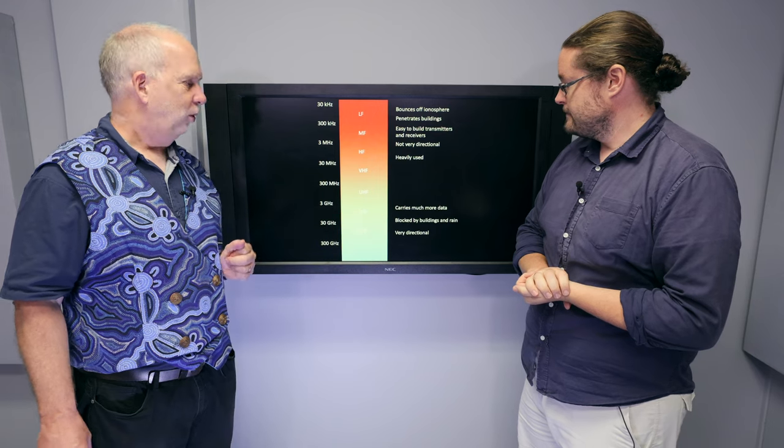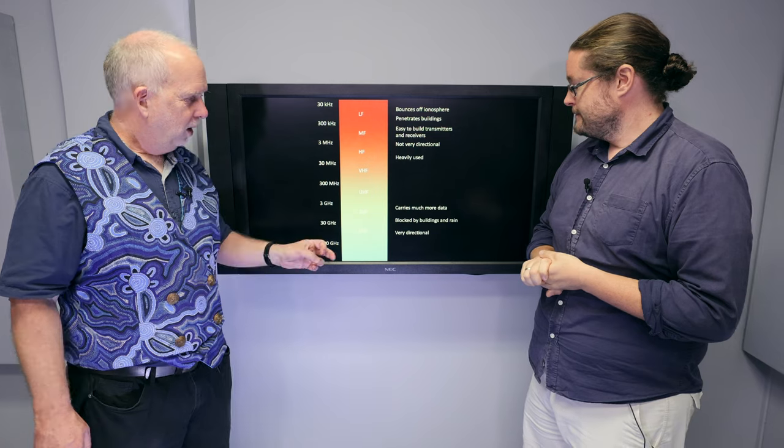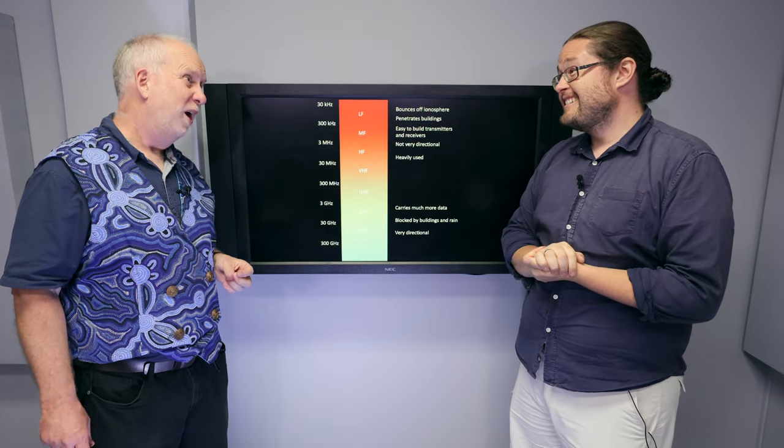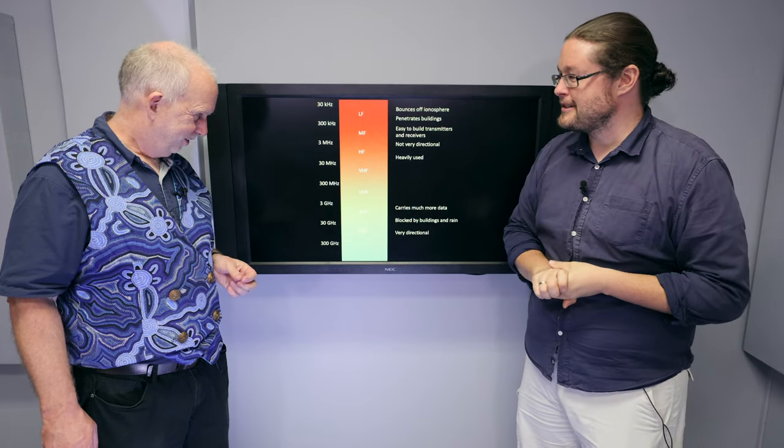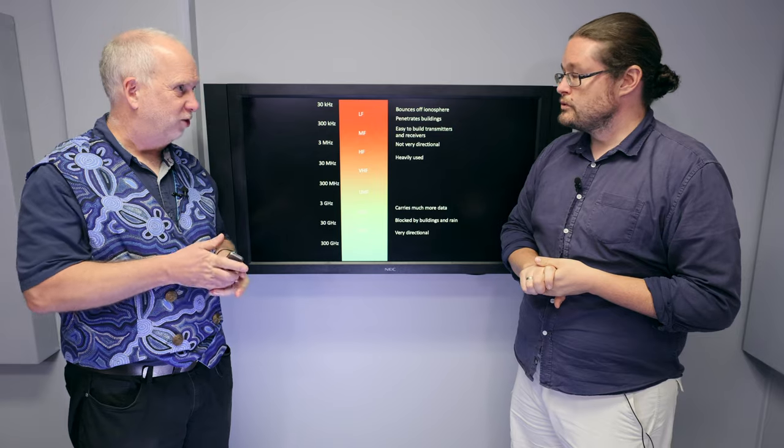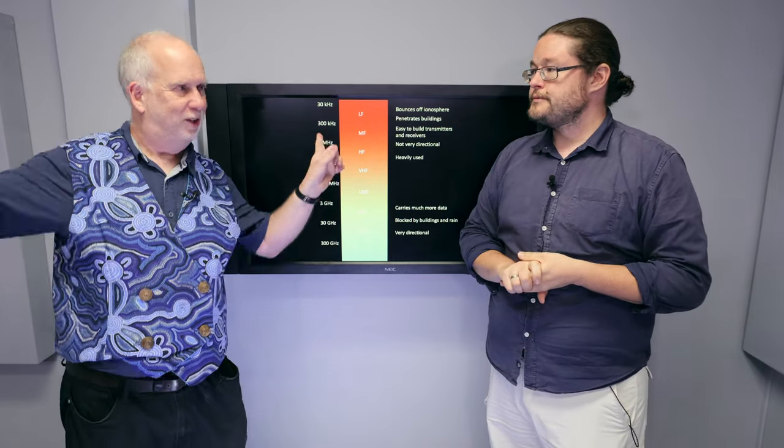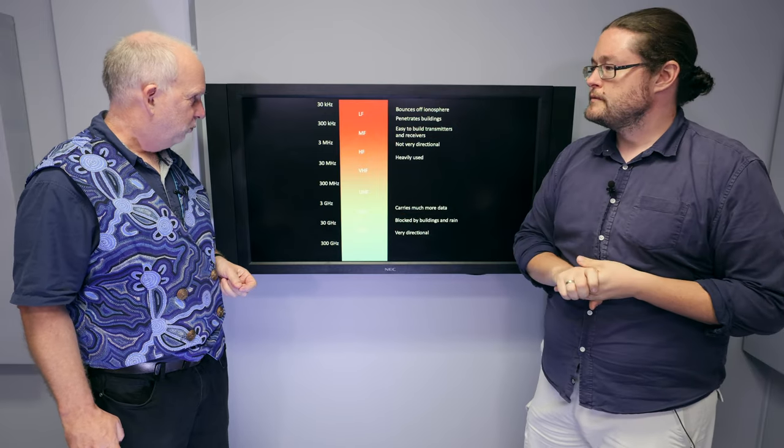When you get to the high frequencies, you can carry much more data. More waves, so more data. Yes. But it's blocked by buildings and by rain in particular. So that's not great if you want to send critical signals to your military. It's very directional. If you have a dish beaming, it only goes that way. Whereas a low frequency dish beaming that way will send signals off almost everywhere. So there's trade-offs for doing both? That's right.